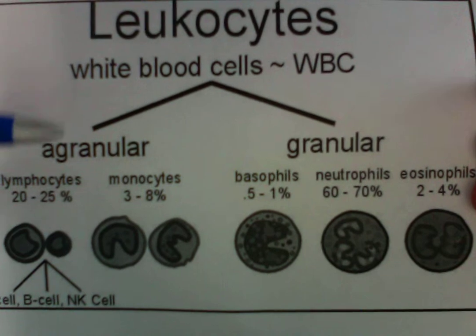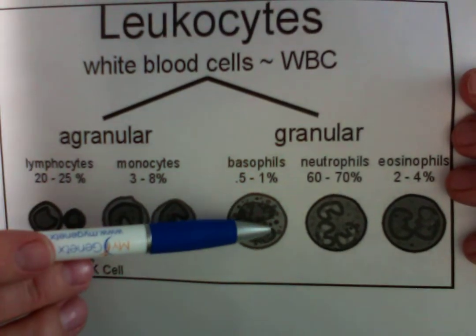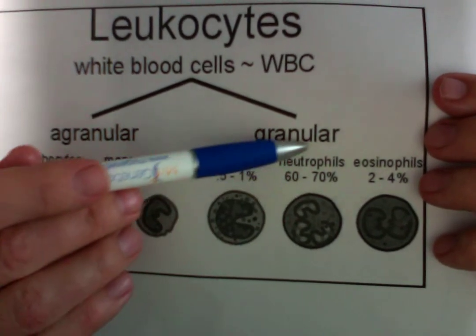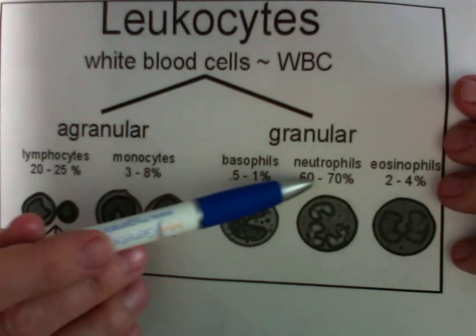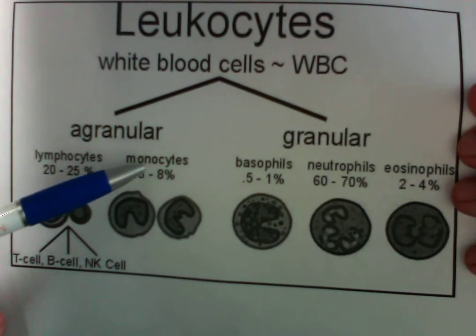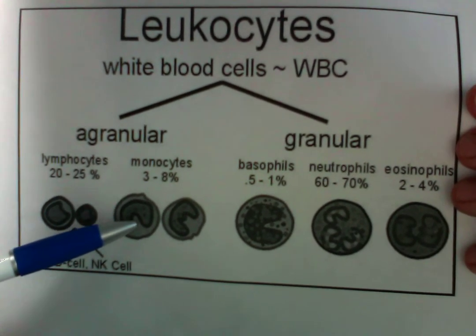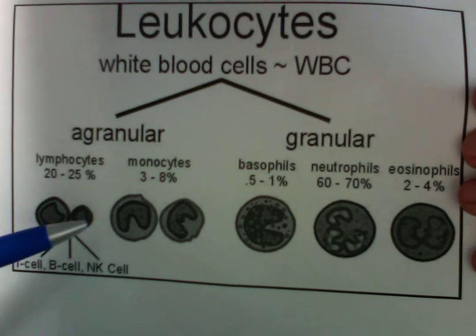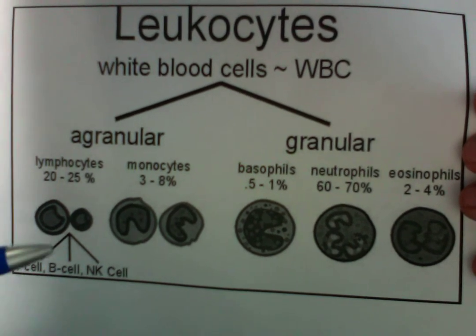When you break down leukocytes, you have agranular leukocytes and granular leukocytes. Granular just means they have these little granules or pockets in them, and the vast majority of granular cells are the neutrophils — 60 to 70 percent of them. Monocytes are also involved in LP plaque 2 and foam cells that create those hot, liquid, or necrotic areas of the plaque.